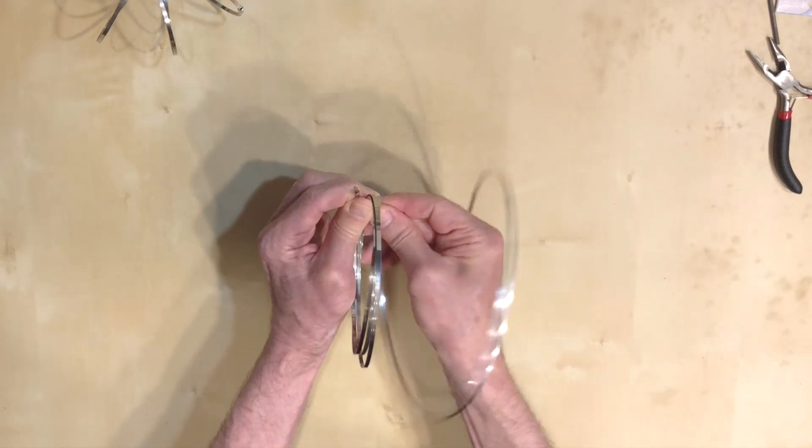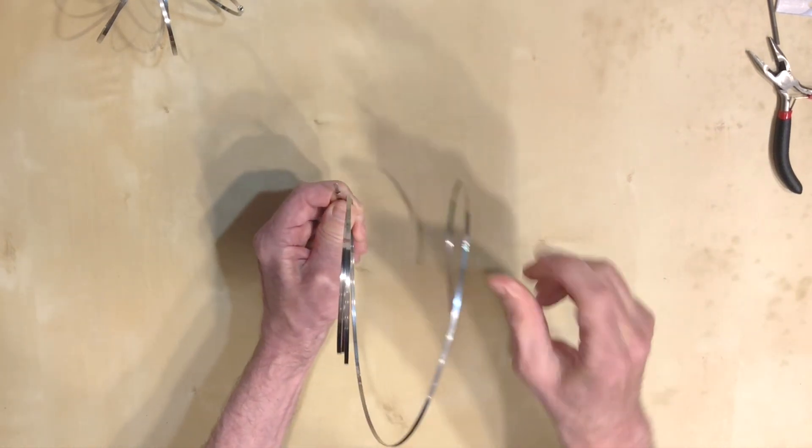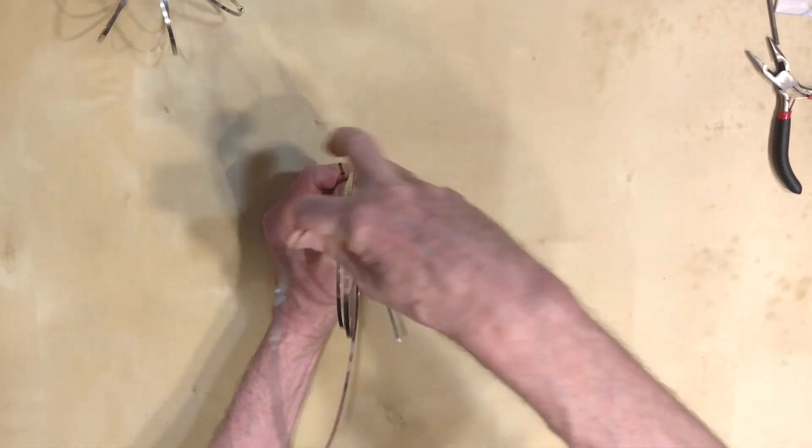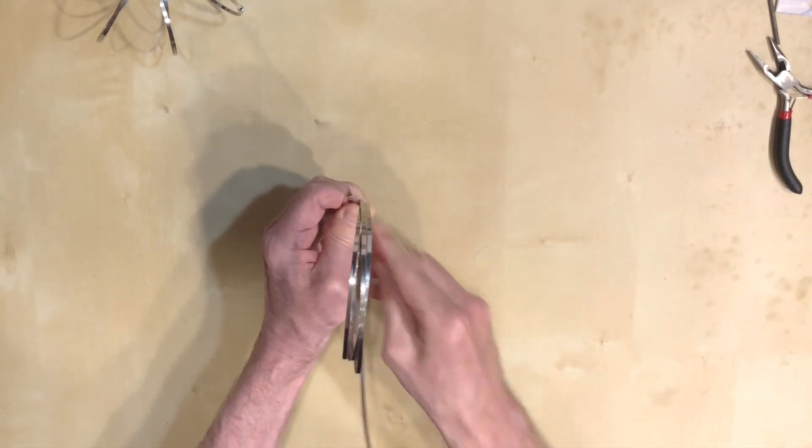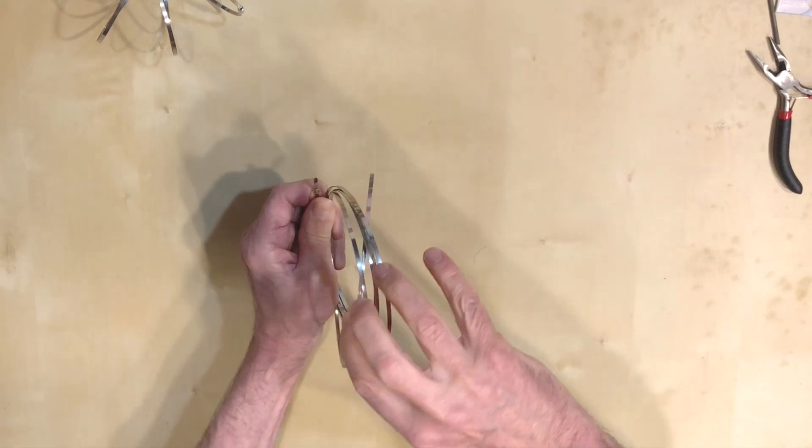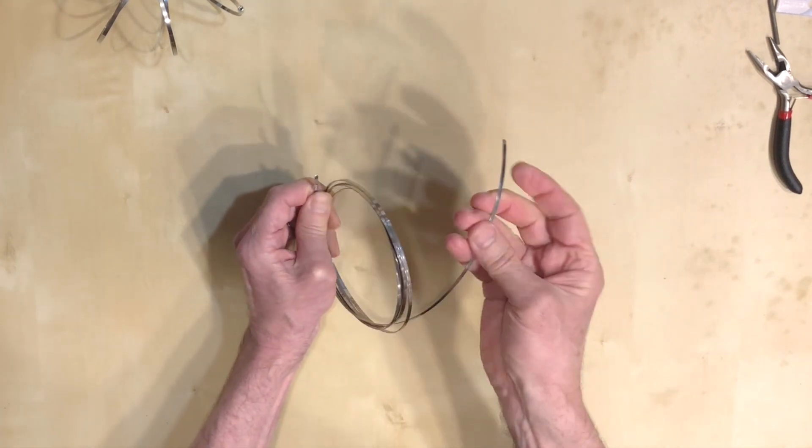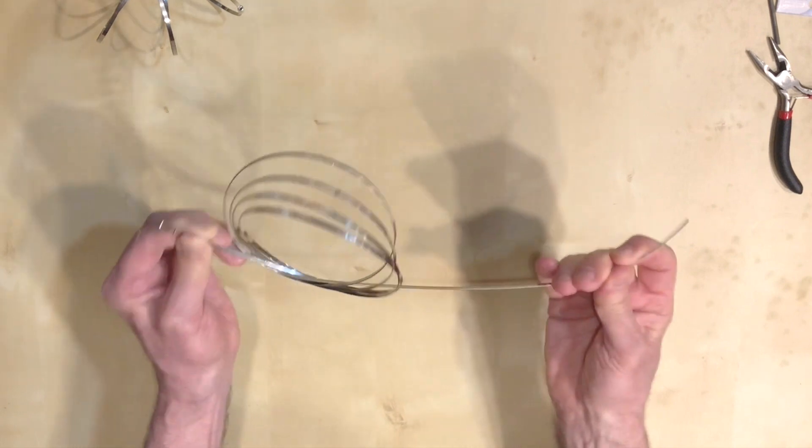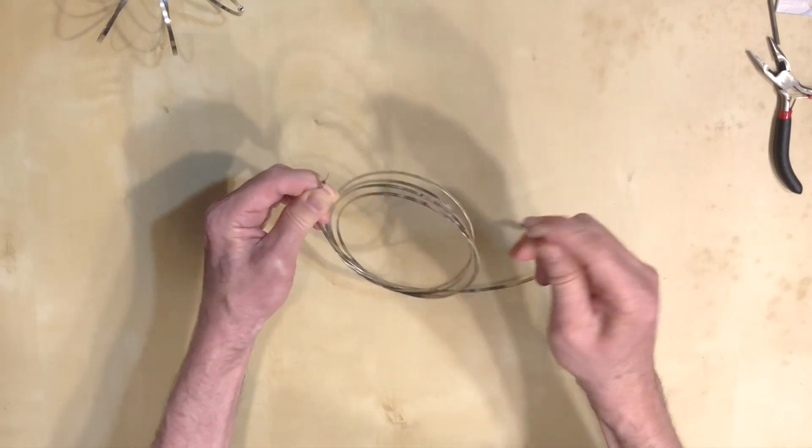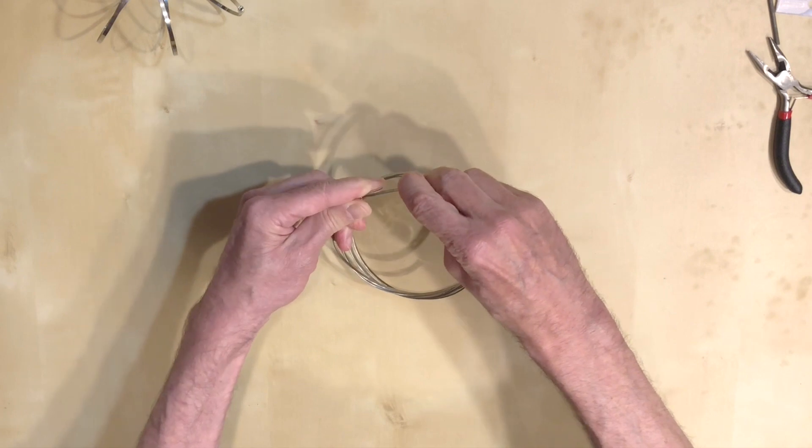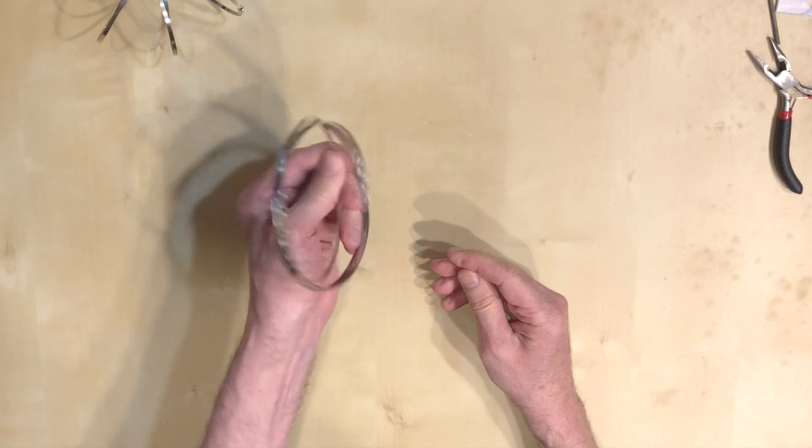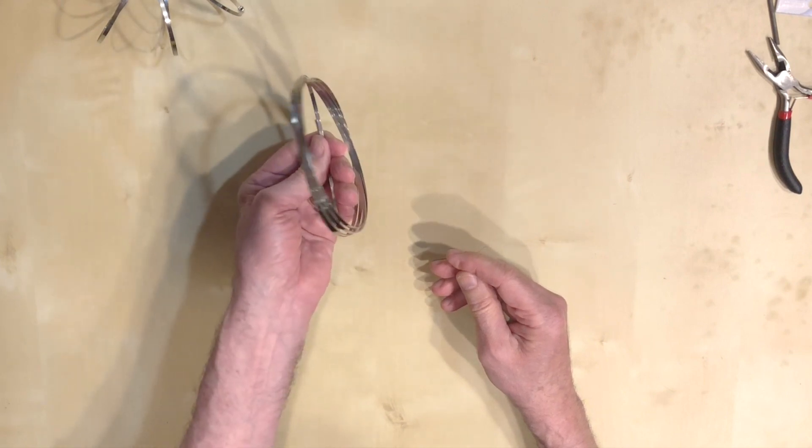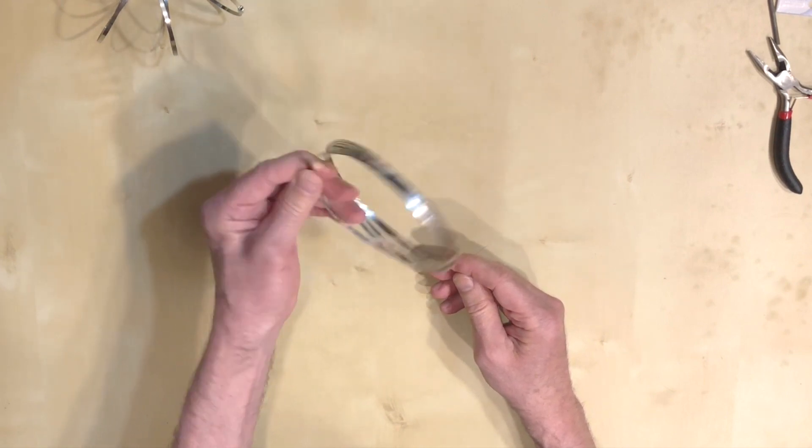I continue doing that. I can make as many or as few coils as I want, and every time I'm passing the rest of the wire through all the coils. Now I have the two ends. I'm holding them tight.